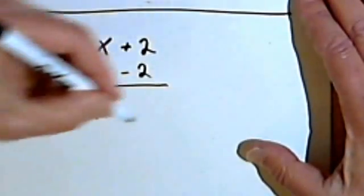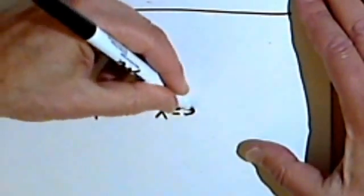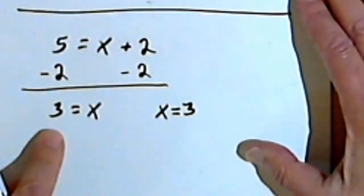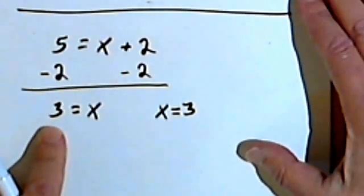I can rewrite this if I want to write my answer nicely as x equals 3. But in doing the arithmetic, doing the math, it doesn't matter where my x ends up.